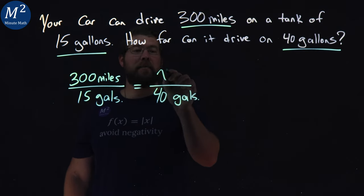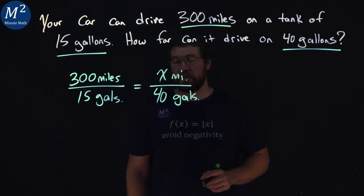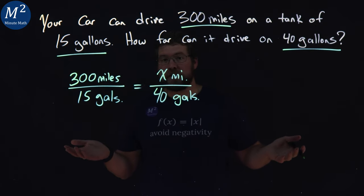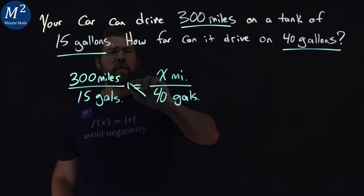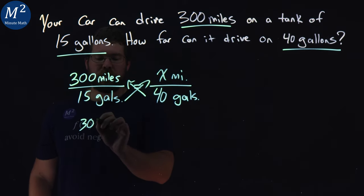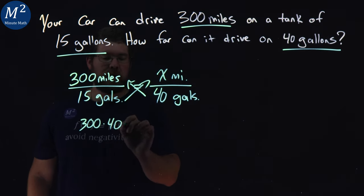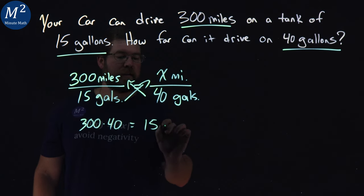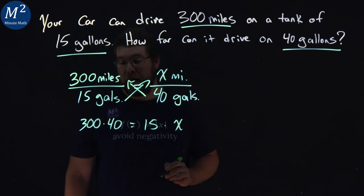And we want to see how many miles we can drive. So now we have a proportion here. Let's solve it. Let's cross multiply - 40 up here. So we have 300 times 40 equals 15 times X.